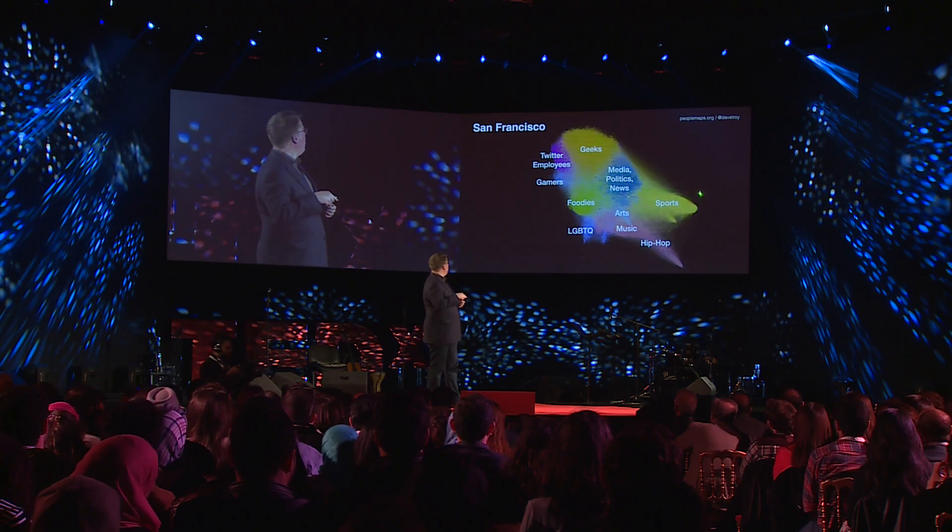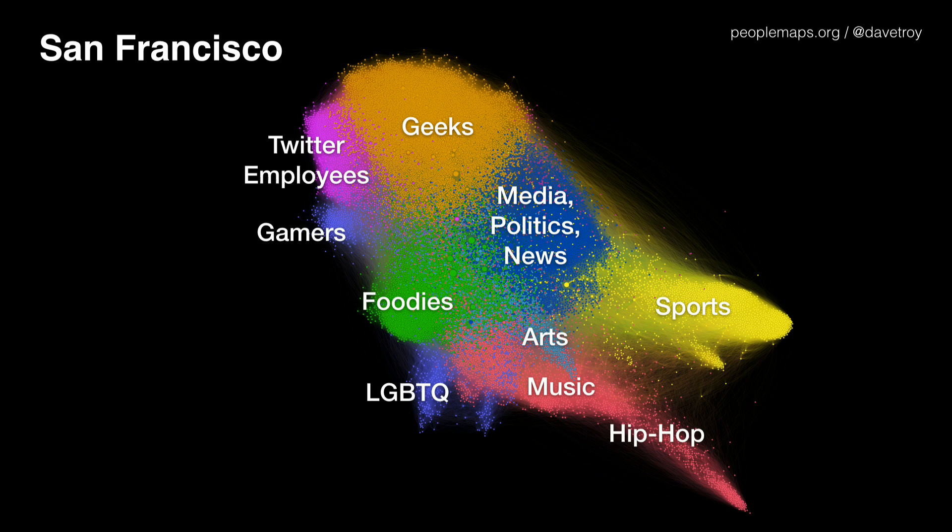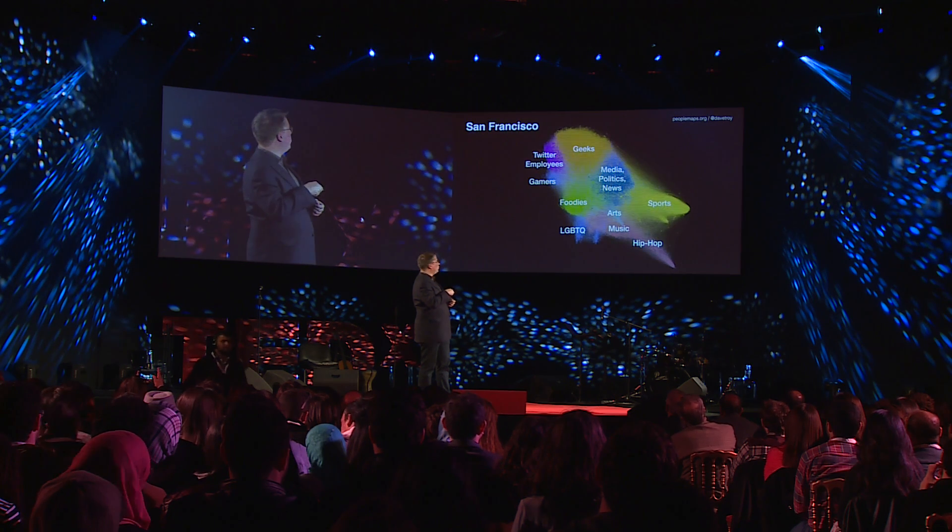This is San Francisco — again, not a geographic map, but a map of communities. One of the things you may know about San Francisco is that with the big influx of venture capital money, there's been a huge group of new geeks that have sort of taken over the city. You can see them growing like a cancer on the top of the city. There's even a group identifiable as Twitter employees. Then you have media, politics, news, gamers, foodies, arts, the LGBT community, and hip-hop on the opposite end from the geeks.